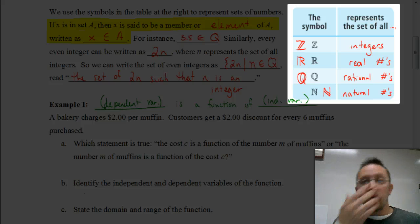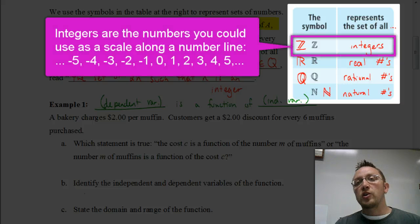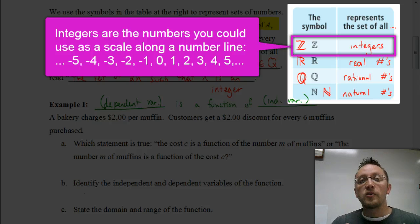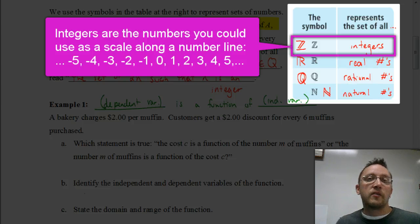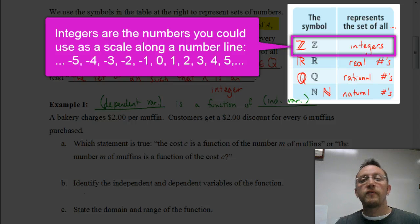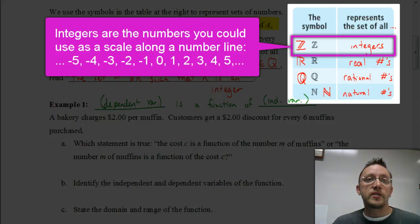Moving up to the next category, we have integers. Integers include those counting numbers, but they also include 0 — because 0 is not included as a natural number. So integers include numbers like 1, 2, 3, 4, and so on, but also 0, then negative 1, negative 2, negative 3. It's like the numbers you'd put along a number line: 0, 1, 2, 3, 4, 5 all the way to infinity, and then the negative numbers — negative 1, negative 2, negative 3, and so on.